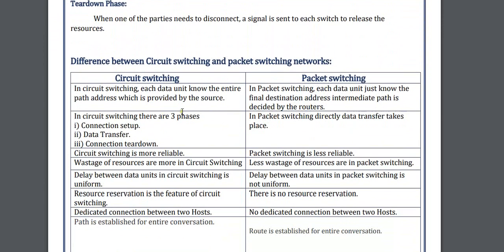Here is the difference between circuit switching and packet switching. In circuit switching it has three phases, but in packet switching no phases are available. Circuit switching is more reliable but packet switching is less reliable. Circuit switching is quite faster than packet switching. In the worst case, waste of resources occurs in circuit switching because first it sets up a line, then it sends the data. An example of circuit switching is a telephone line.